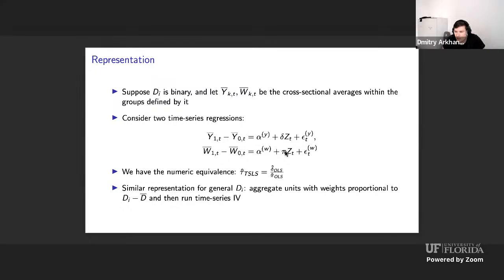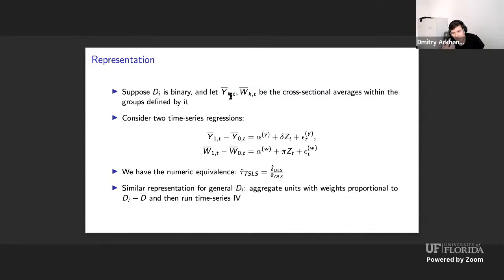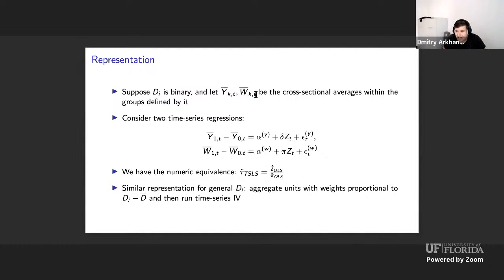Think of a simple situation where D_i is binary — zero or one — so some units are affected by an aggregate shock and others are not. In that situation you can construct cross-sectional averages: take your outcomes and the endogenous variable and aggregate for units with D_i equal to zero and D_i equal to one in each time period. You end up with time-series objects that vary over time for two different groups.